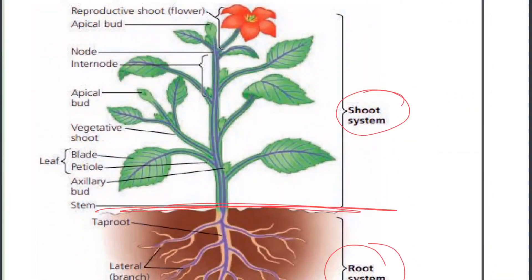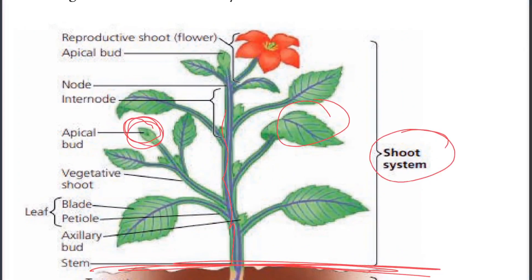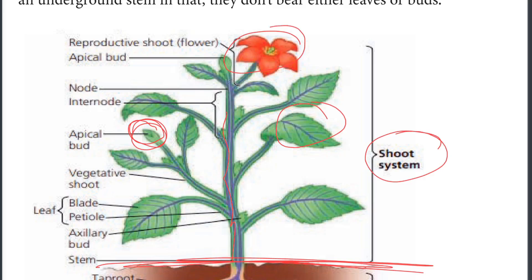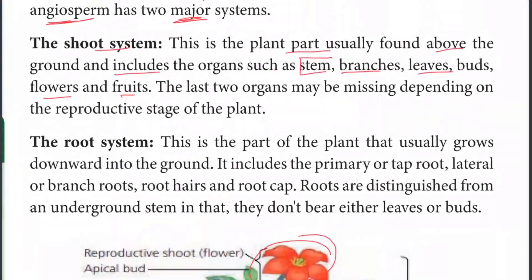The shoot system includes leaves, stems, buds, and flowers. If you have a flower, you can see the fruit of the plant. It depends on the reproductive stage of the plant.